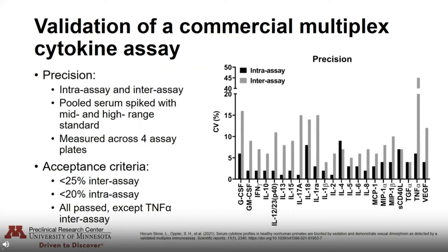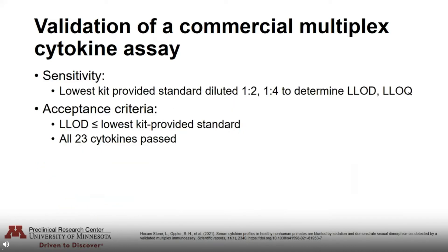Next we looked at precision — both intra- and inter-assay precision. To do this, we pooled serum spiked with both mid- and high-range standards and measured these across four assay plates. Our acceptance criteria was CVs below 25 percent for inter-assay precision and below 20 percent for intra-assay precision. All analytes passed except for TNF-alpha inter-assay precision.